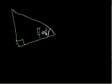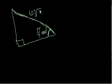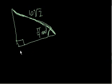If the measure of this angle is pi over 4 radians, and I also know that this side of the triangle right here is 10 square roots of 2, then the question is: what is this side of the triangle? I'm going to highlight that in orange.